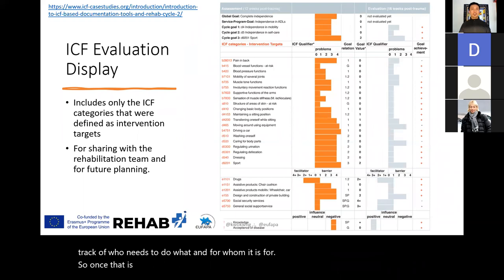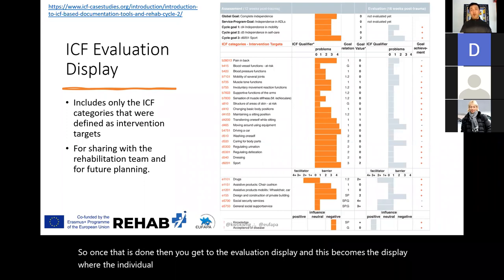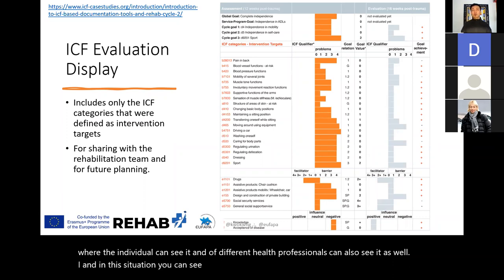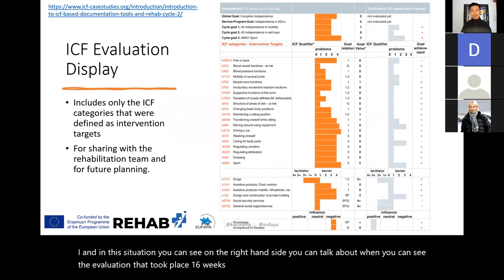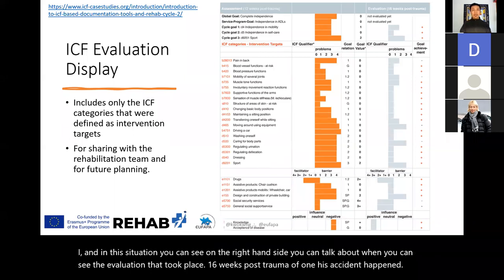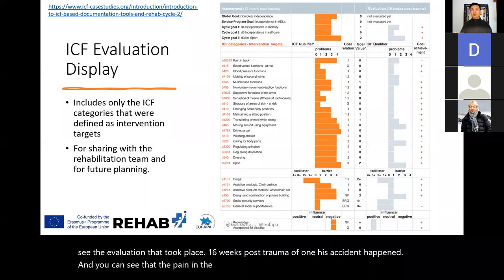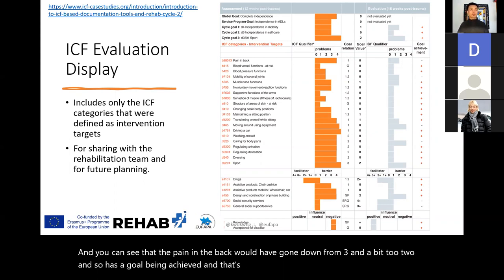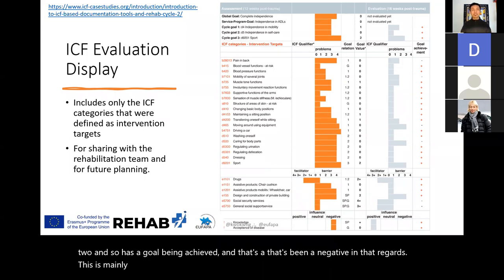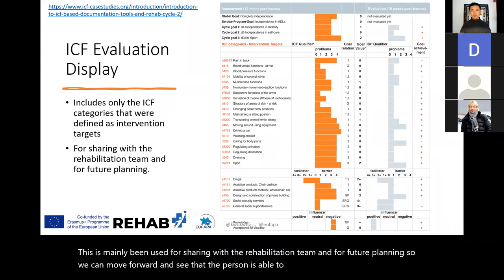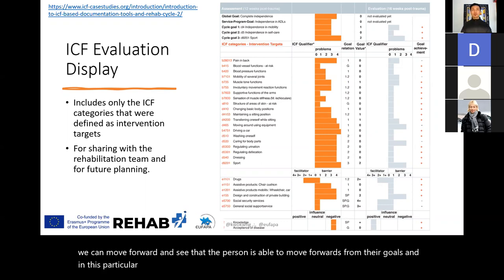Once that is done, you get the evaluation display — visible to the individual and different health professionals. You can see the evaluation that took place 16 weeks post-trauma from when the accident happened, and you can see that pain in the back went down from three-something to two. This has mainly been used for sharing with the rehabilitation team and for future planning so the person can move forward from their goals. In this particular case, this person has decided to choose sport as their main goal.